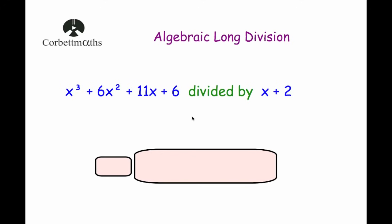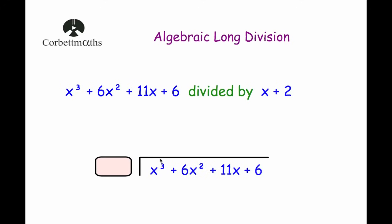What we're dividing goes underneath the bus shelter — this polynomial goes underneath the bus shelter. So we've got x cubed plus 6x squared plus 11x plus 6 beneath the bus shelter. And in front will be what we're dividing by, the divisor — our x plus 2 goes in front of the bus shelter.